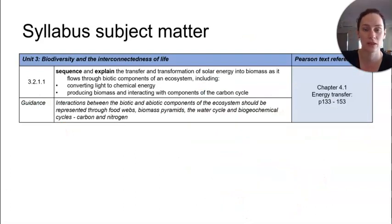So there we are, we're looking to sequence and explain the transfer and transformation. Remembering that transfer is occurring from one organism to another as the form of chemical energy, but a transformation means it's changing form. So if we're taking light energy and turning it into chemical energy because we can photosynthesize, that is a transformation.